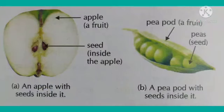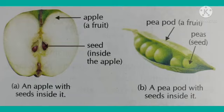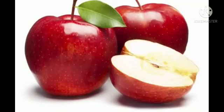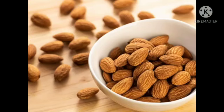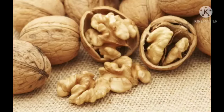So my dear students, at the place on the plant where we had a flower originally, we now have a fruit. The fruit protects the seeds. Some fruits are soft, fleshy, sweet and juicy, like apples, mangoes and oranges. But some fruits are hard and dry, such as almonds and walnuts.